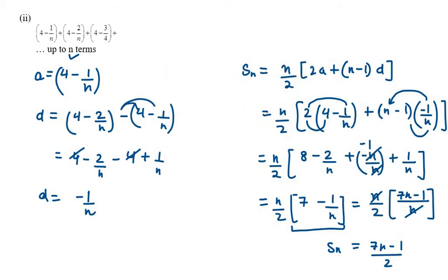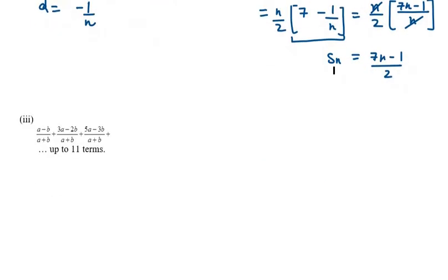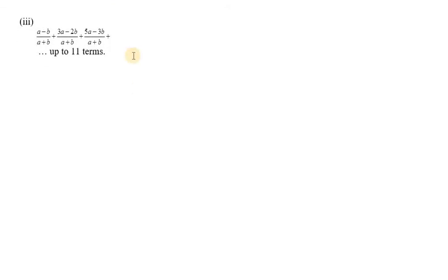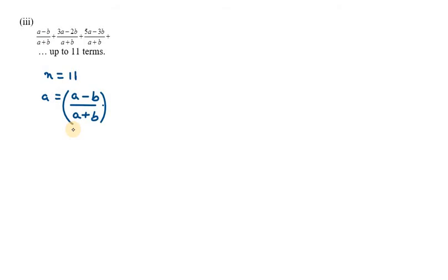That's the answer for the second part. Moving on to the third part. We have terms like A minus B over A plus B, and we need to find the sum up to 11 terms. So N is 11. The first term A is (A minus B) over (A plus B). Now we need to find the common difference D.